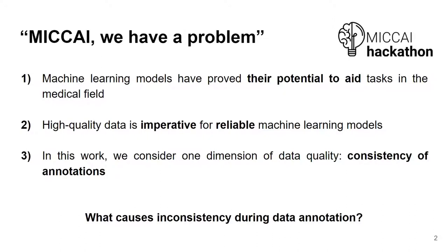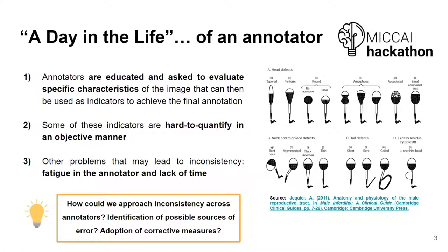The first question we asked ourselves was: what causes inconsistency during the data annotation process? One problem that leads to inconsistency is subjectivity. Annotators are trained for annotation and asked to evaluate very specific characteristics of images, which are used as indicators for their final decision. However, these characteristics may be hard to quantify objectively. For example, in sperm morphology classification, one relevant characteristic is the smoothness of the head, which may be subjective and lead different annotators to perform different annotations. We also verified that fatigue and lack of time may lead to inconsistency.